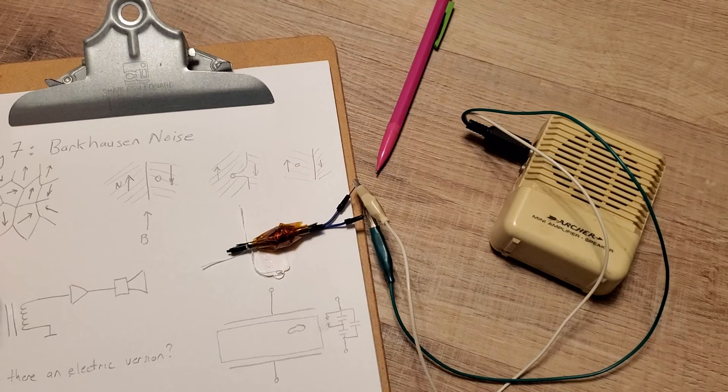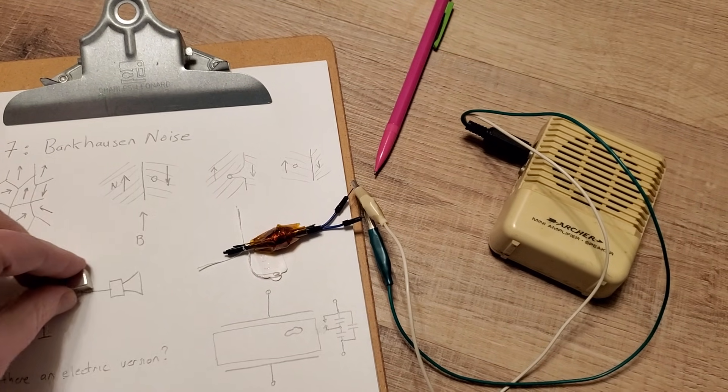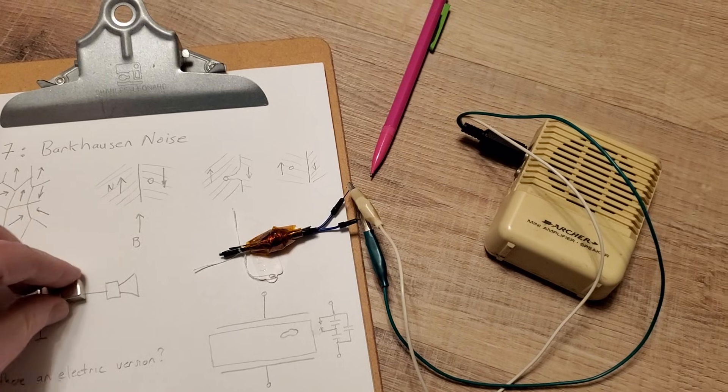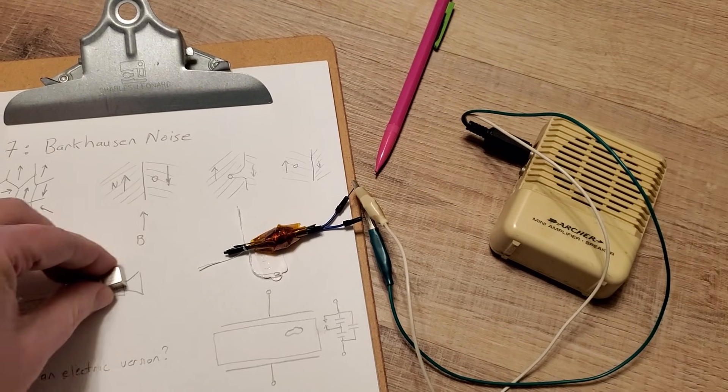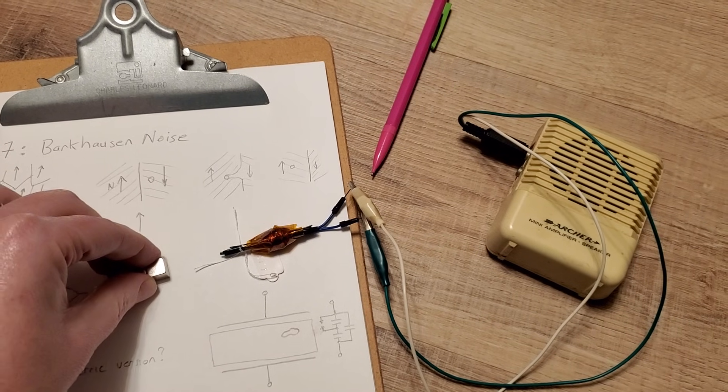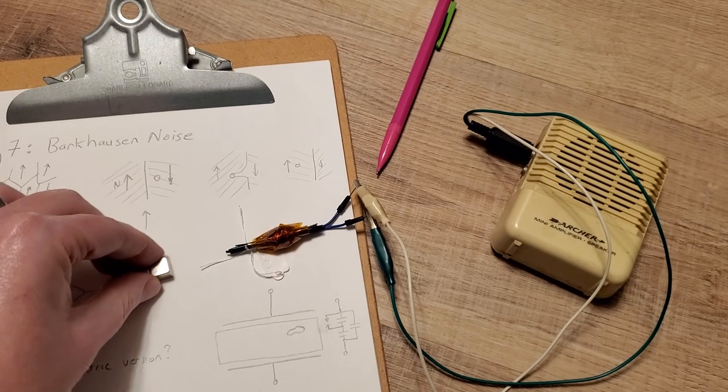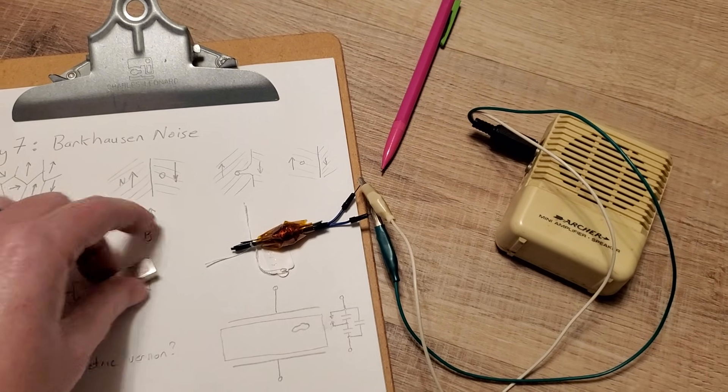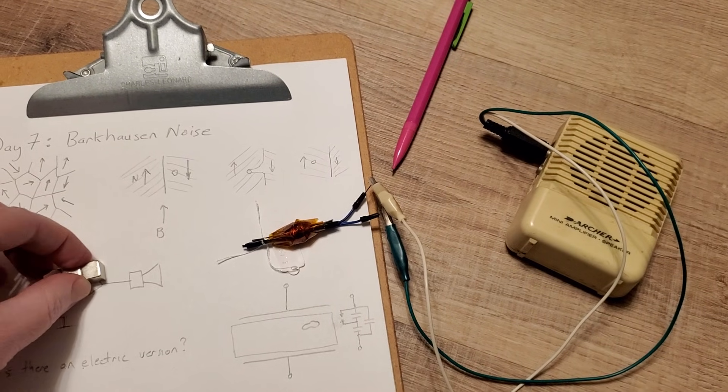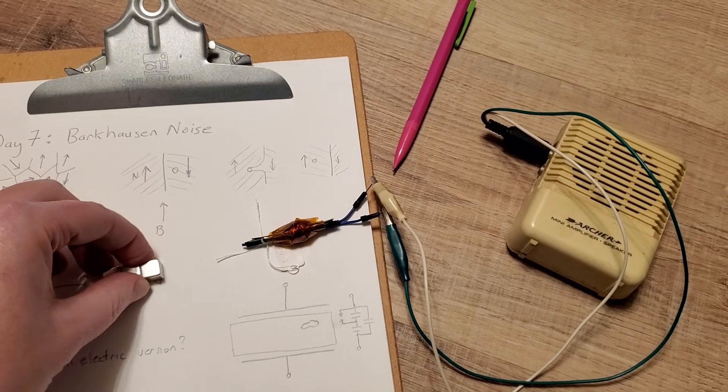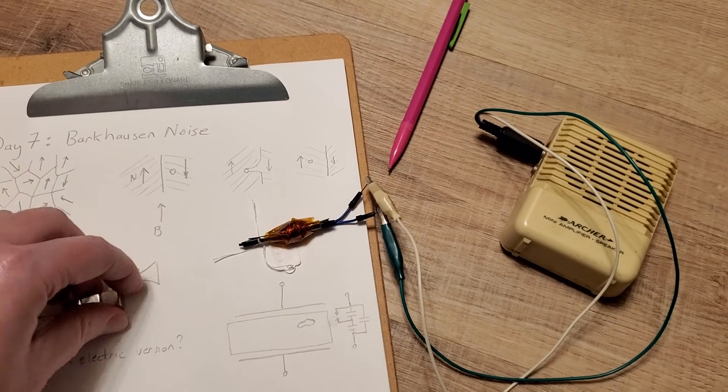If I approach it with the other side, note that once I've flipped all those domains over the remnants in the core means that I don't get any more Backhausen noise until I exceed that. I go a little bit farther and I get more domains getting flipped over, and then if I turn it around and I start magnetizing in the opposite direction.